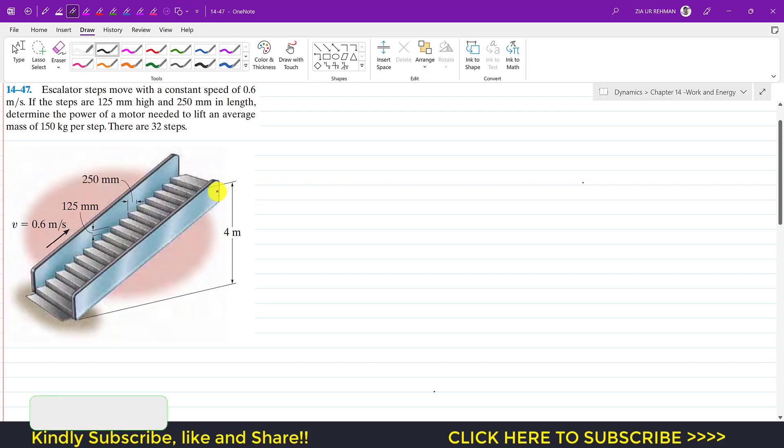Hello students, welcome to Engineer's Academy. Kindly subscribe my channel if you haven't subscribed yet. Now we are going to solve this problem which says that escalator steps move with a constant speed of 0.6 meters per second.